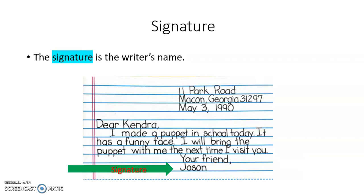The last part of your letter is the signature. The signature is the writer's name — this is what tells you who is writing the letter. In this letter, the signature is Jason. Notice the green arrow pointed to Jason.